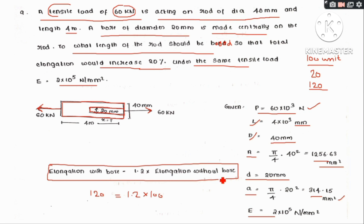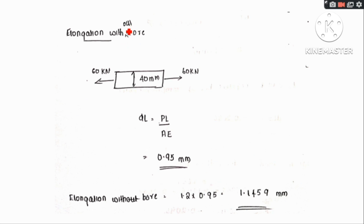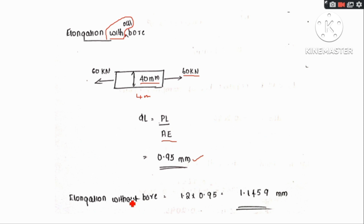We calculate the elongation without bore using delta L = PL/AE. With load P = 60 kN, length = 4000 mm, diameter = 40 mm. The area is π/4 × 40² = 1256.64 mm². So delta L (without bore) = 0.9549 mm. Then 1.2 times elongation without bore gives approximately 1.1459 mm.